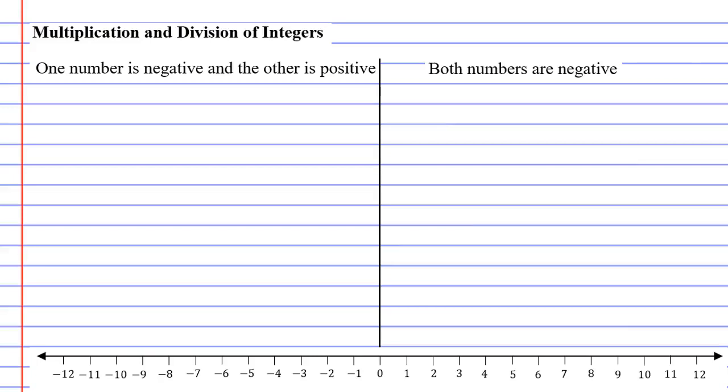In this video, we're going to look at what happens when you multiply and divide integers. And there are two scenarios that we're going to look at. The first one being that one number is negative and the other is positive.